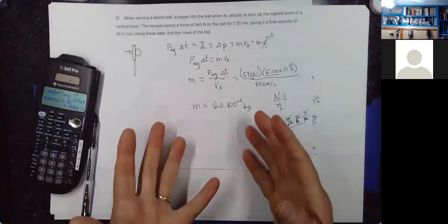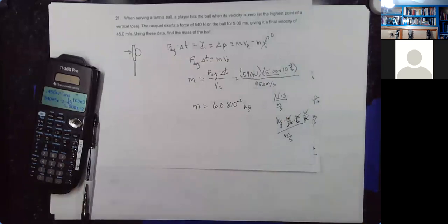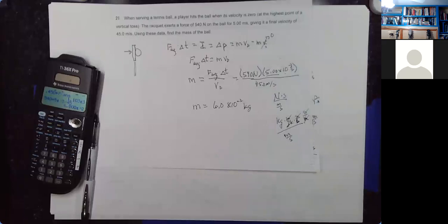Those are some impulse and momentum problems, and hopefully you're getting somewhat familiar with that. Tomorrow we'll take a look at some collision problems and then possibly a few more on Thursday. Then next week is a review and then the last final test. I'll try to get some stuff up on Sapling for a final review — actually, there's a fair amount of material up there right now.